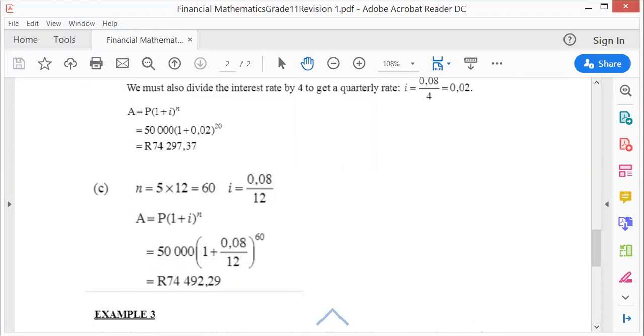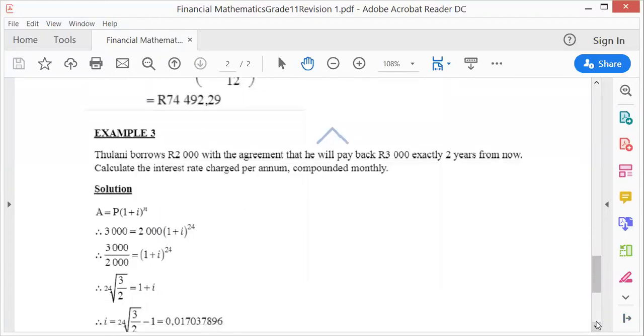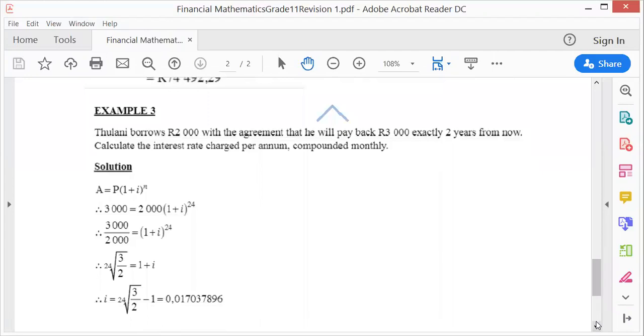Next example: Tulani borrows 2,000 rand with the agreement that he will pay back 3,000 exactly 2 years from now. Calculate the interest rate per annum compounded monthly. Again, is it simple or compound? It is compound.